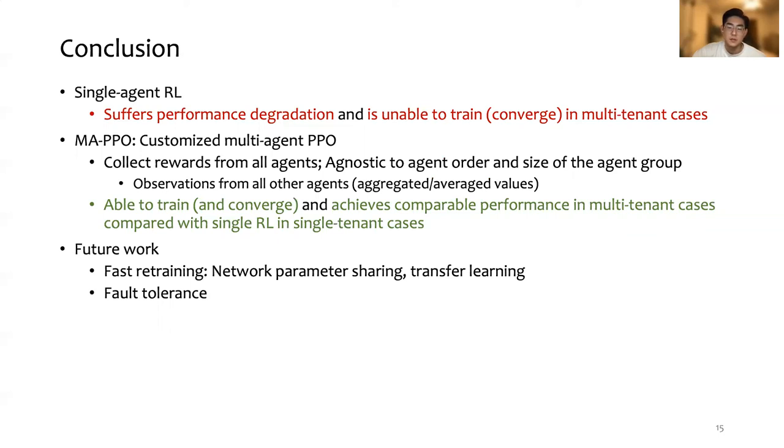Nevertheless, a few challenges and potential improvements are left for future work, including fast retraining for newly joined or updated functions with network parameter sharing or transfer learning, and fault tolerance to agent disconnection or RL transition corruption. Thank you for listening.